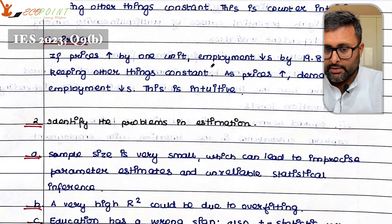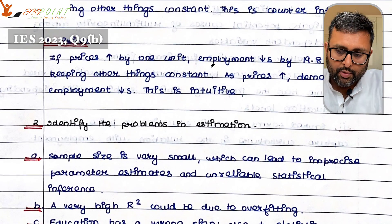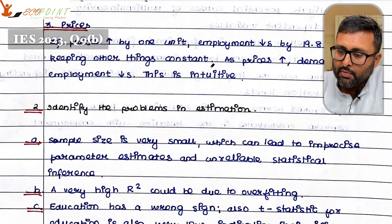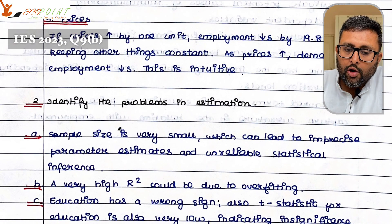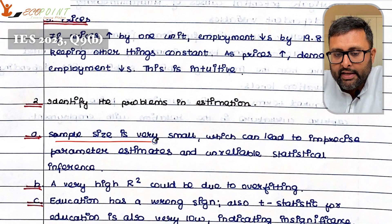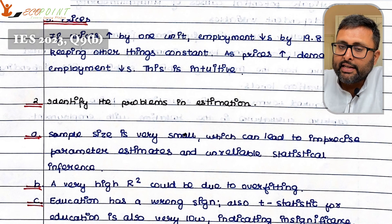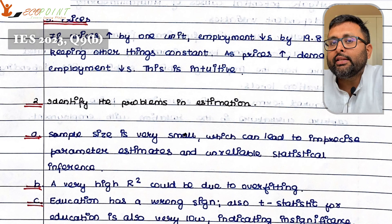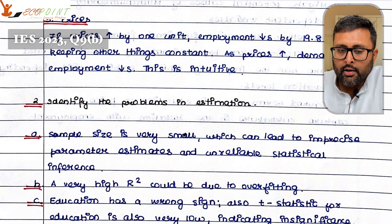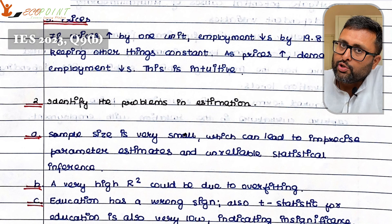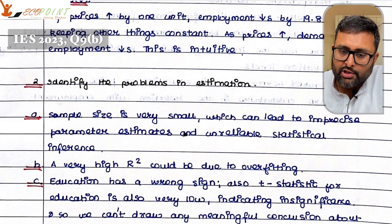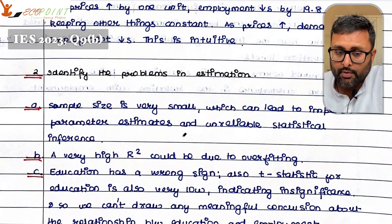But there are problems in the estimation. The second part of the question says to identify the problems in estimation. One, the sample size is very small — just 16 data points. With only 16 data points, you are running the regression and you are bound to have problems. The estimates you are going to get will be very unreliable, so you cannot just rely on them. That is the first problem.